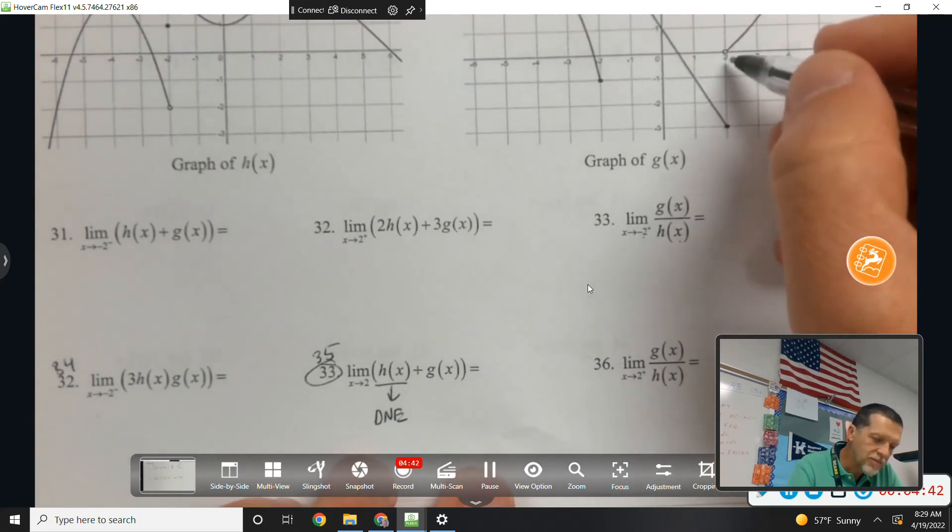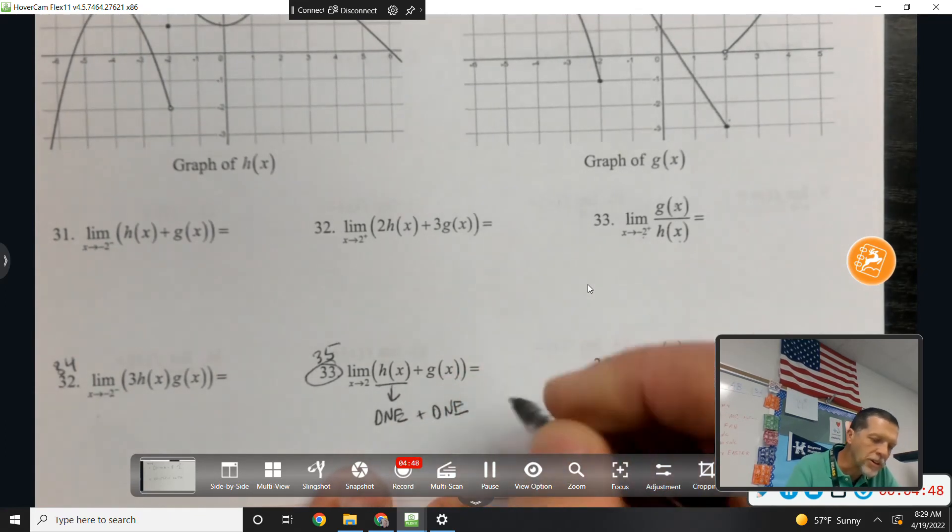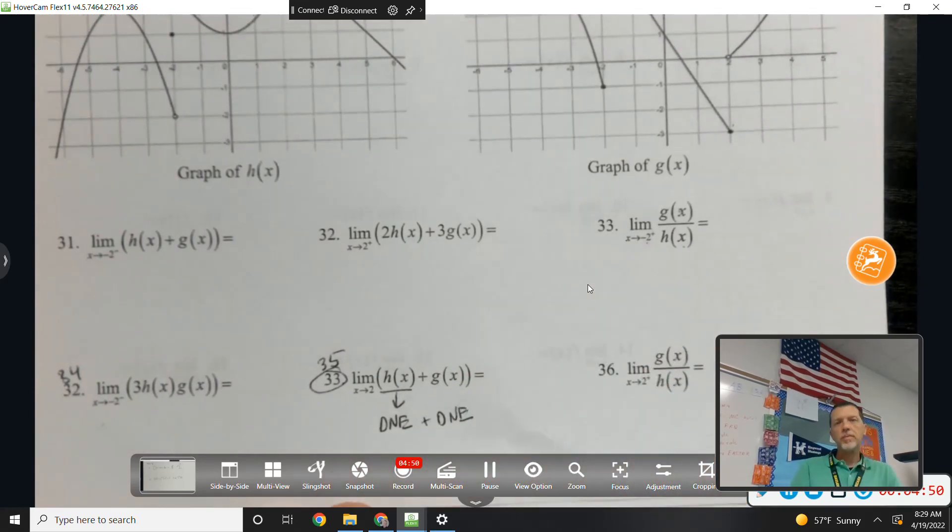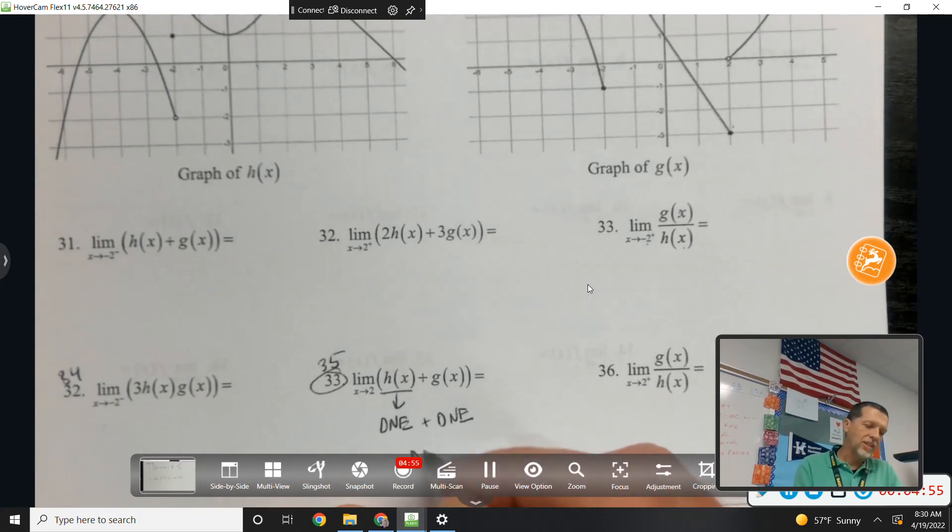So, I guess I can look and see what g of x is. Oh, g of the limit as x approaches 2 of g is also DNE. But it doesn't really matter. If one of them is DNE, then the whole limit is DNE. It's not like 2 DNE. It just doesn't exist.